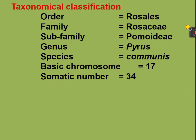Hello everybody, myself Professor Pallavi Huley from KKVA College of Horticulture, Nasik. Today we are going to see about the cultivation practices of pear. Pear has a botanical name Pyrus communis, it belongs to the family Rosaceae. It has a basic chromosome number of 17 and somatic chromosome number of 34.